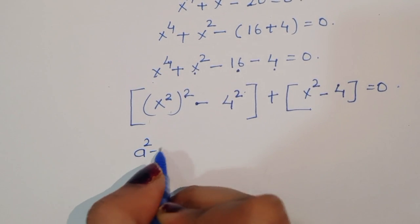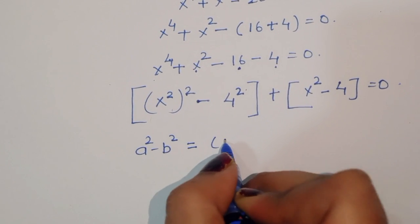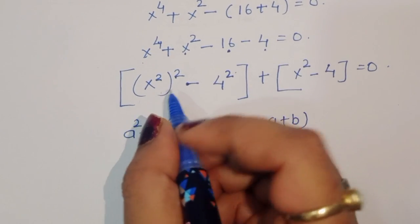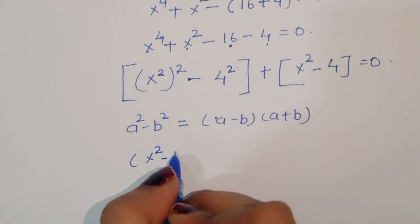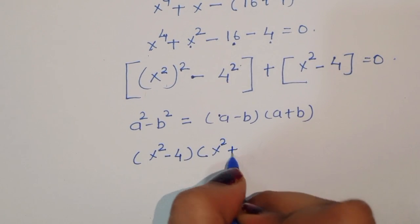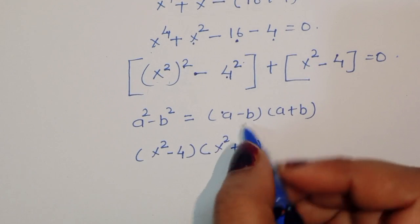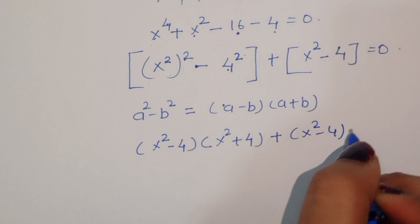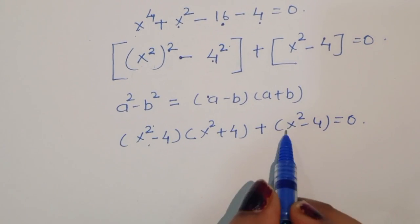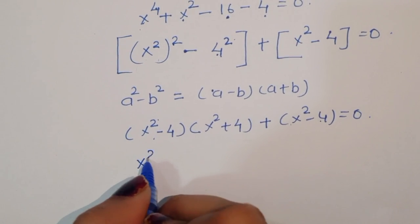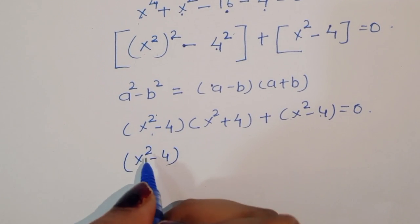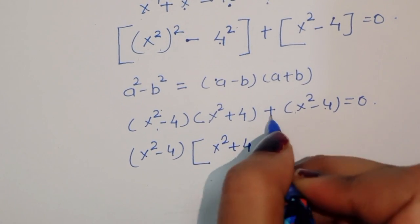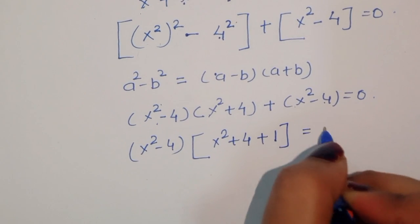This is a difference of squares form. Using the formula a² - b² = (a - b)(a + b), we can write (x² - 4)(x² + 4) + (x² - 4) = 0. Taking (x² - 4) as common, we get (x² - 4)(x² + 4 + 1) = 0.